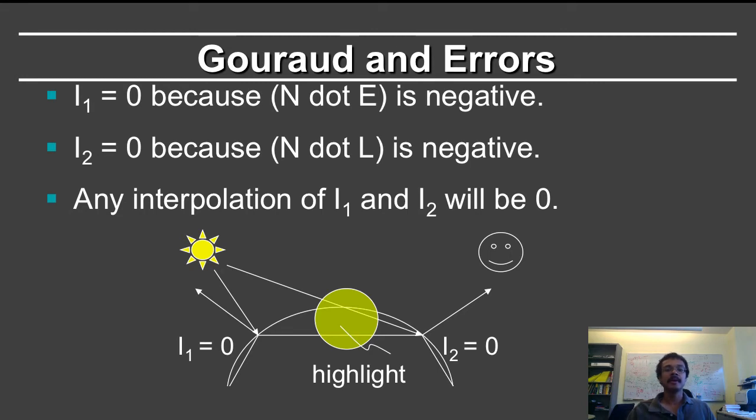But prior to the advent of fragment shaders, you also needed to use Gouraud shading for specular highlights. And the way you handled that was by tessellating or breaking the model into enough triangles that relative to the size of the triangles, the shading was still smooth.